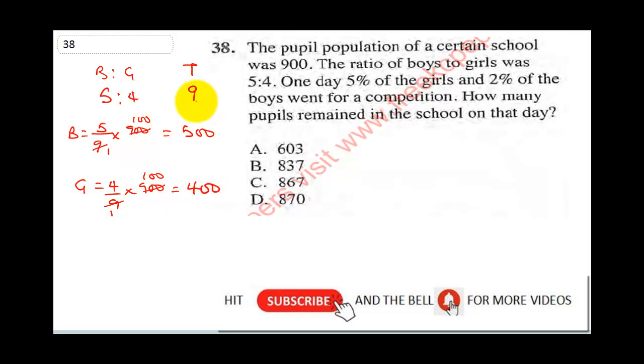Now when you sum it up, you get back your total, which is 900. Now it says 5% of girls went for competition, so percentage of girls that went for competition is 5 over 100 times 400. This is going to be when you cancel out your double zeros, you're going to get 20. So 20 girls went for competition.